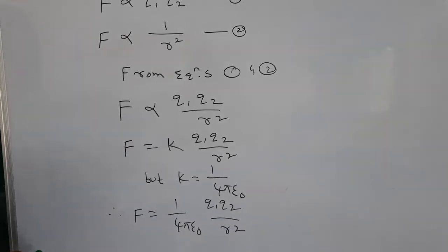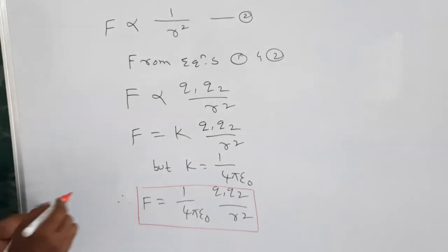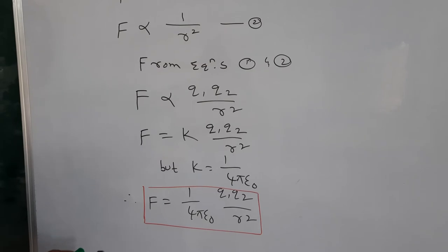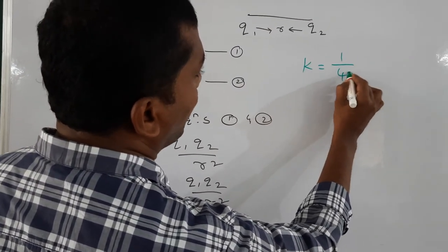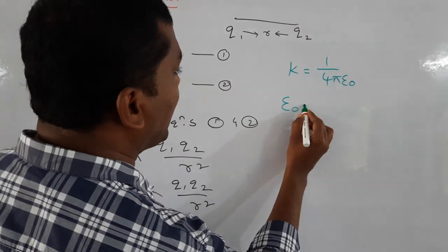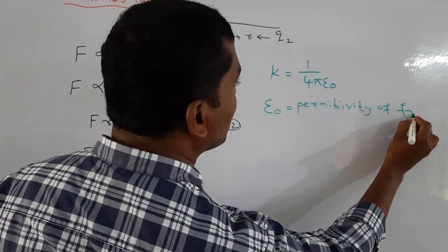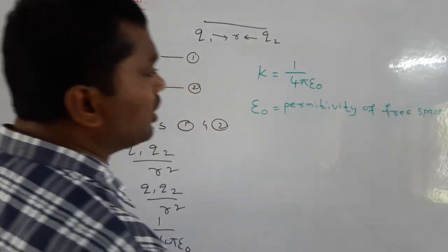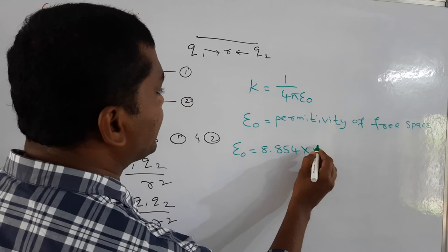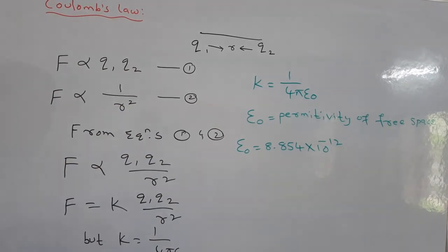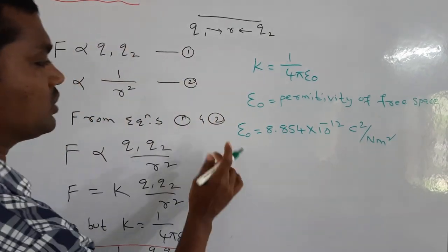This is the final equation, and this principle is called Coulomb's law or Coulomb's inverse square law. The final equation is F equals 1 over 4 pi epsilon naught times q1 q2 by r squared. In this equation, the proportionality constant K equals 1 over 4 pi epsilon naught, where epsilon naught is the permittivity of free space or vacuum. The value of epsilon naught is 8.854 times 10 to the power minus 12, with units Coulombs squared per Newton meter squared.